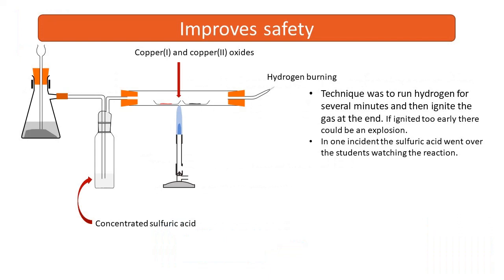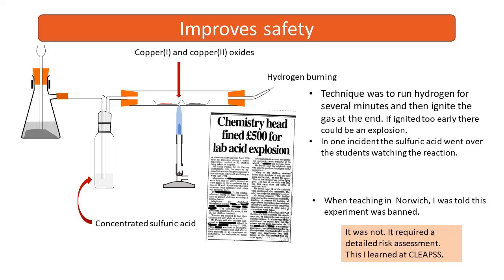Although I had been interested in small-scale experiments when teaching in the 80s, I think it was this experiment that really brought it home to me. Hydrogen was passed through concentrated sulfuric acid to dry it and then over copper oxide to reduce the copper. The hydrogen was burnt at the end to avoid the copper reoxidizing on cooling. The problem was that if you let the hydrogen in too early it could explode in the apparatus. In one such incident the sulfuric acid went all over the children at the front, and this was investigated by the Health and Safety Executive. In the ensuing prosecution the teacher was fined £500, and this was the first prosecution of a teacher in science by the Health and Safety Executive.